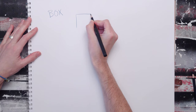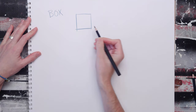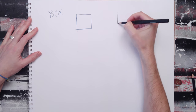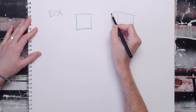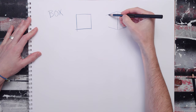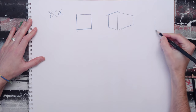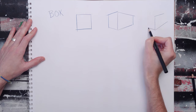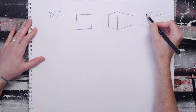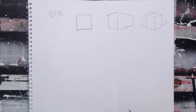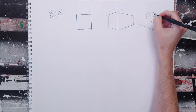You need to know how to draw three types of box. One is the one-sided box, two is the two-sided box, and three is the three-sided box. You'll notice that this has one side, this has two sides, and this has one, two, and three.